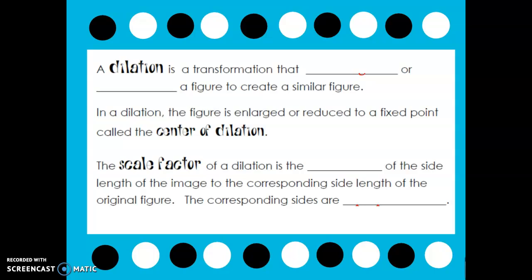A dilation is a transformation that enlarges or reduces a figure to create a similar figure. In a dilation, the figure is enlarged or reduced to a fixed point called the center of dilation. For us, the center of dilation is always going to be the origin. The scale factor of a dilation is the ratio of the side length of the image to the corresponding side length of the original figure.